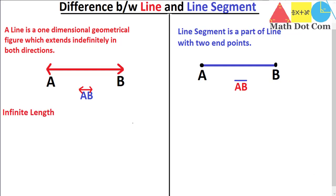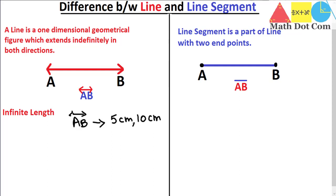The next difference between line and line segment is length. Since a line is a one-dimensional geometrical figure extending infinitely, we cannot measure its length. We can't say that the length of line AB is 5 cm, 10 cm, or 100 cm. We can't find the length of a line because it is an infinite line extending in both directions. So AB is an infinite line and cannot be represented or measured in centimeters or any unit.